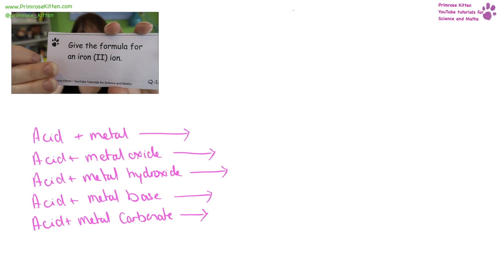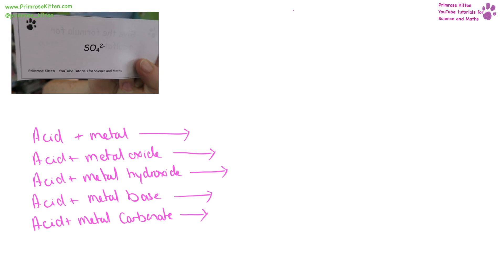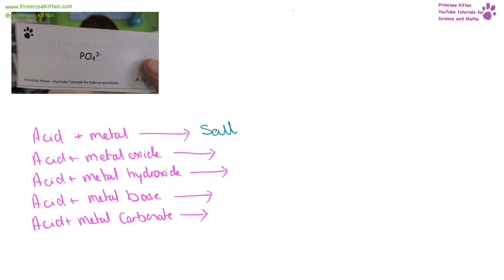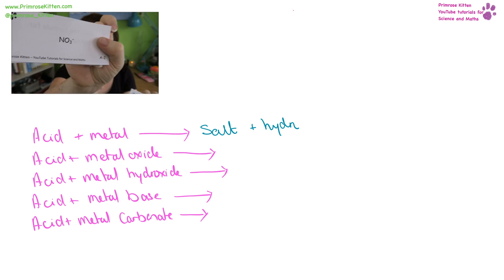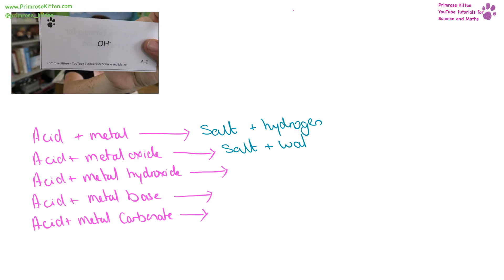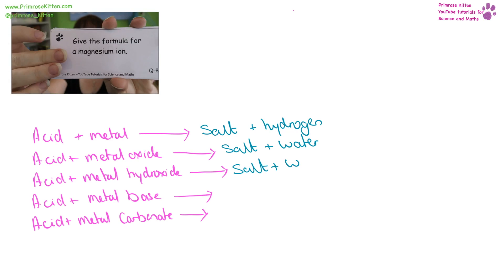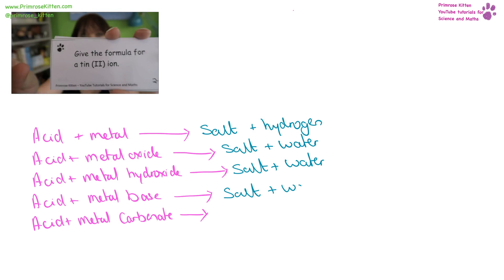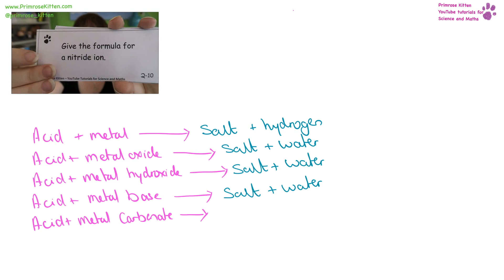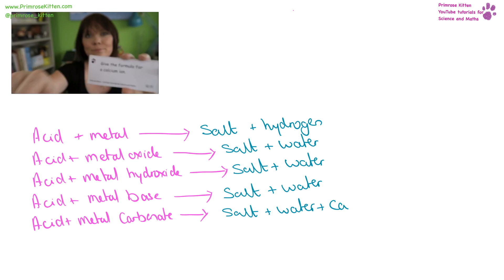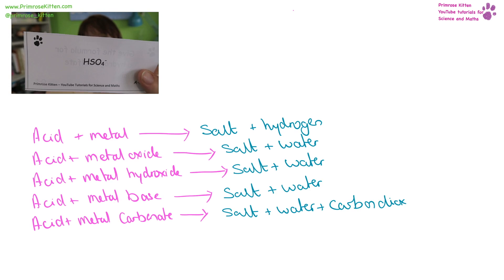You need to remember all of the equations, remember the ions, and be able to work out what is going to come from a reaction. So if we have an acid and a metal, we are going to get a salt plus hydrogen. Acid plus metal oxide is going to give us a salt plus water. Acid plus metal hydroxide is going to be a salt plus water. Acid plus metal base, salt plus water. Acid plus metal carbonate is going to give us a salt, water, and carbon dioxide.